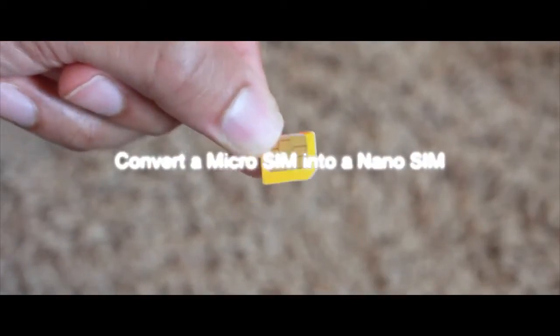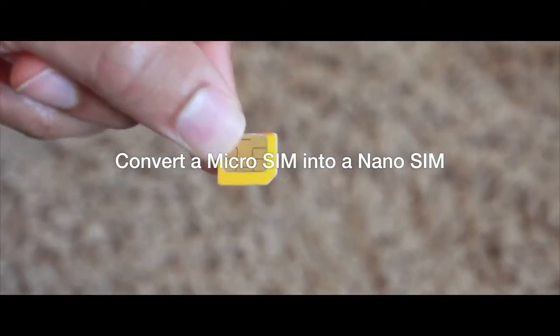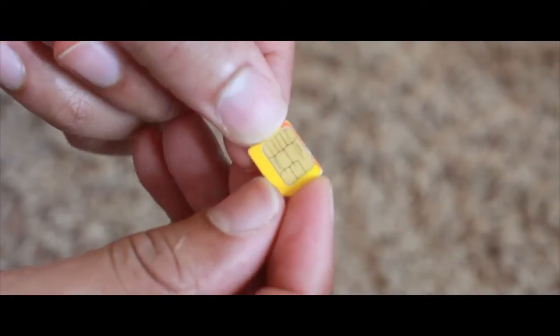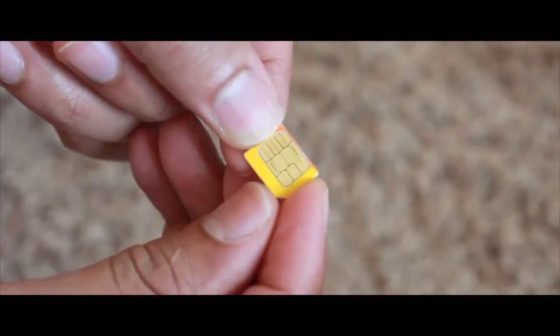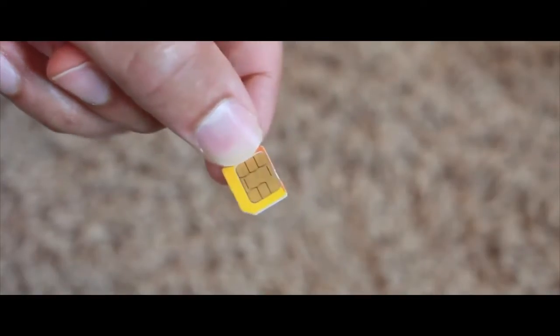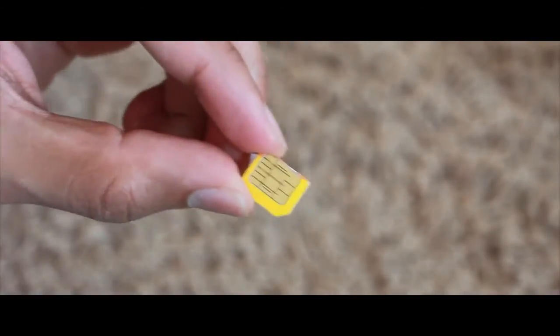First we had the regular SIM card, and then we got the micro SIM card. The micro SIM card has been used in the iPhone 4 and iPhone 4S, but now the iPhone 5 ditches the micro SIM for something else: the nano SIM, which is even smaller.